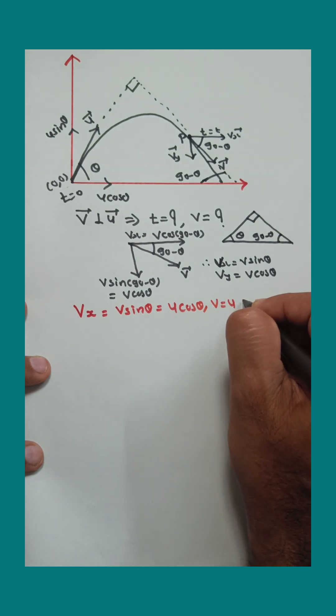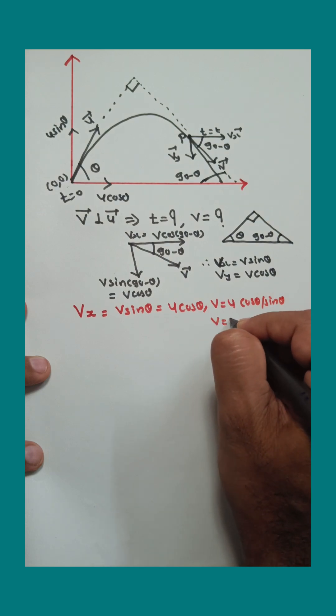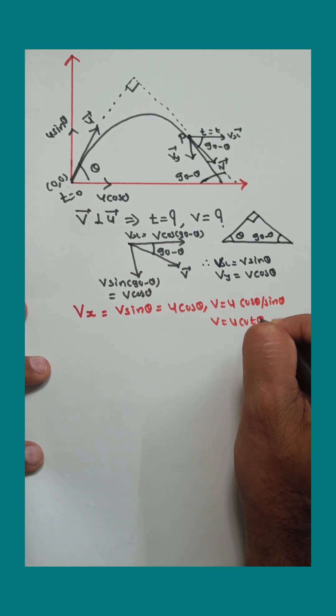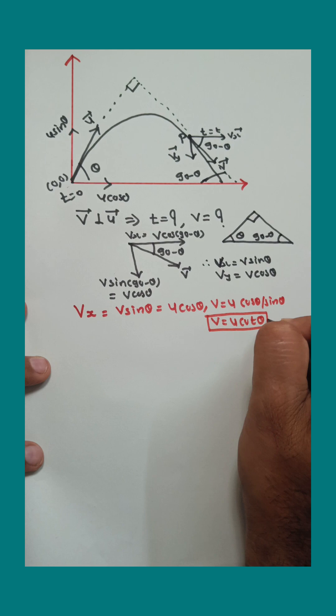So v equals u cos theta upon sin theta, or you can write v equals u cot theta. Equation number one.